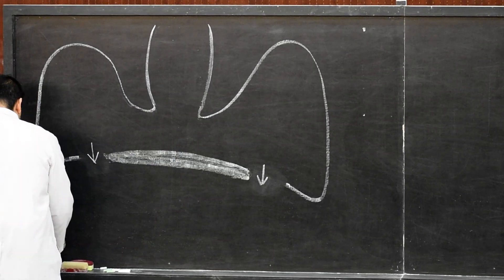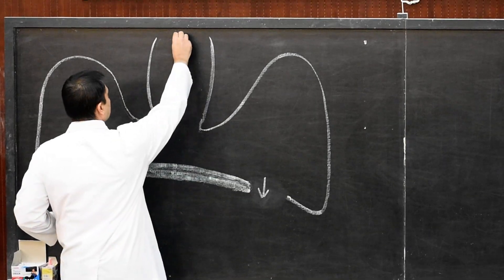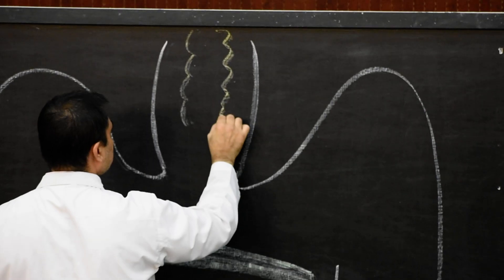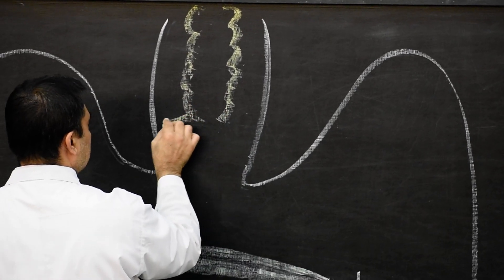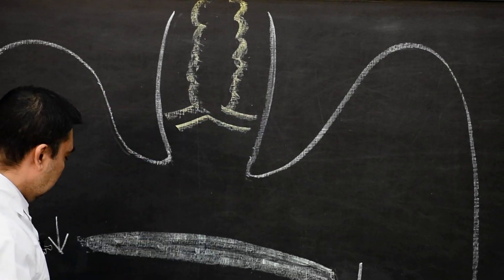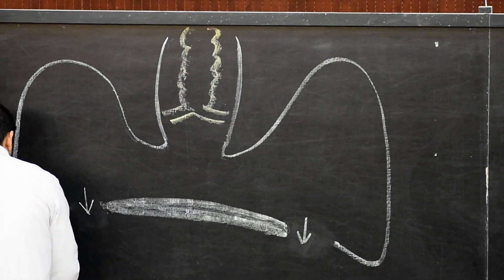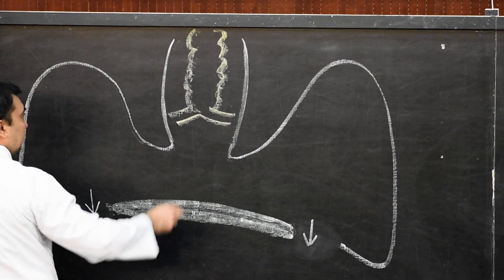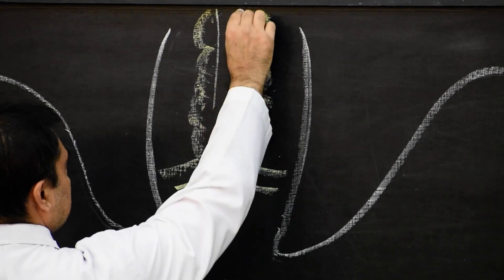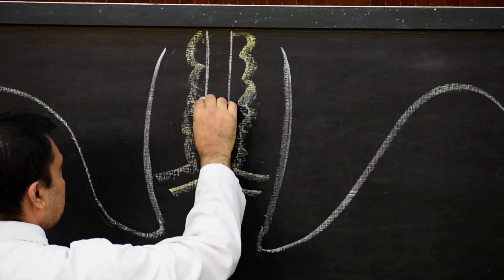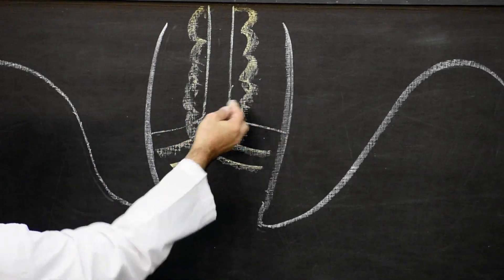Then we go to the pericardial sac. In the pericardial sac, as we know, from the posterior side there will be invagination of the entire heart tubes. With yellow color we show the invaginated portion of the heart tubes. Then what we show is dorsal to the heart tubes — there will be the trachea, the laryngotracheal tube, shown with green color. This laryngotracheal tube will pass posteriorly, posterior to the heart tubes.